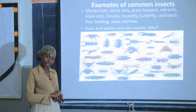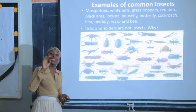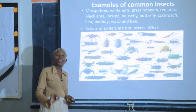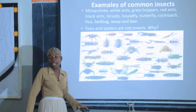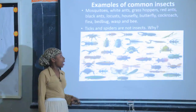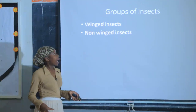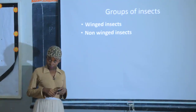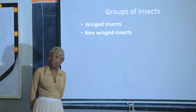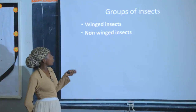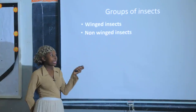Spiders have eight legs, and remember we said a true insect is supposed to have three pairs of legs — or six legs. Since a spider has eight, it is not a true insect. Now, insects can be grouped into two groups: those that have wings, called winged insects, and those that do not have wings, called non-winged insects.